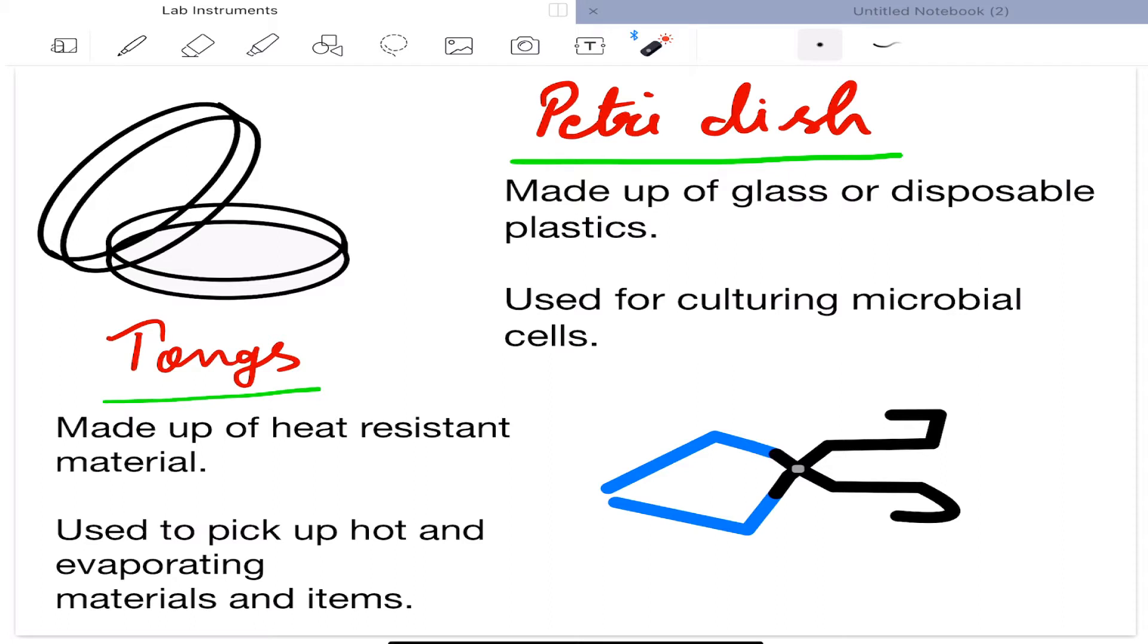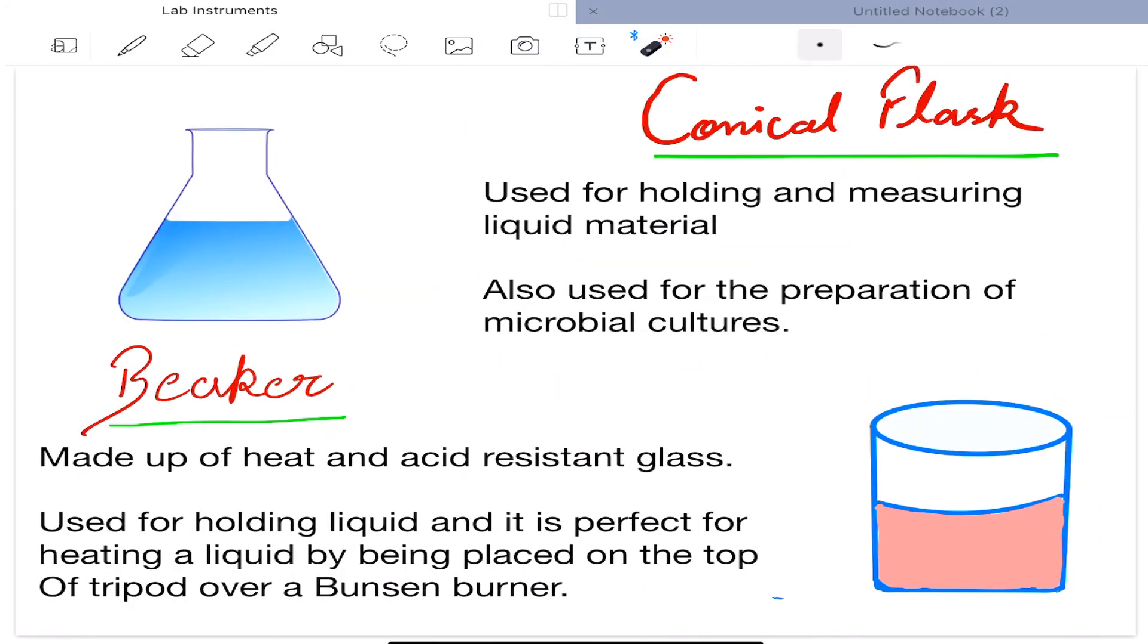It is made up of glass or disposable plastic. It is used for culturing microbial cells. Next is tongs. Tongs is made up of heat-resistant material. It is used to pick up hot and evaporating materials and items. Next is conical flask. Conical flask is used for holding and measuring liquid material. It is also used for the preparation of microbial cultures.